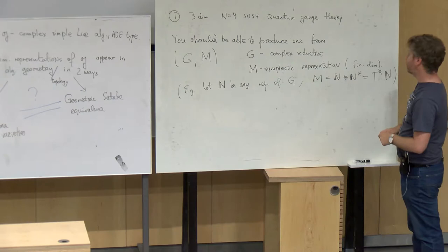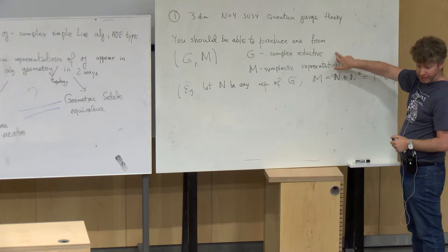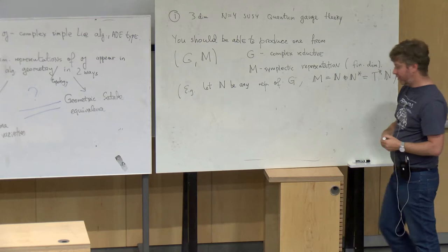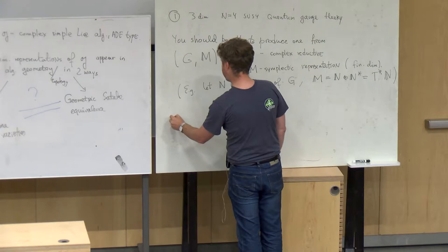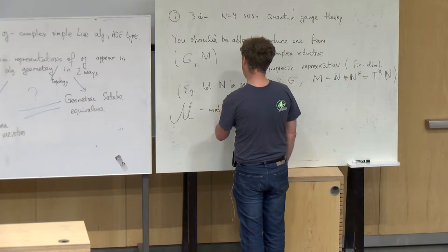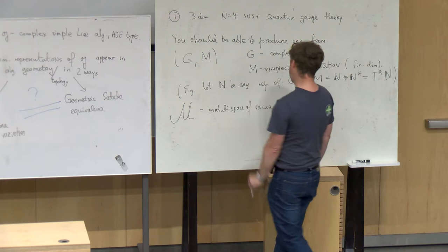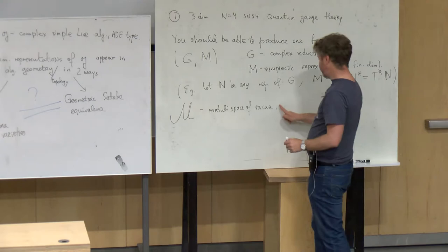This is the unclear object called a three-dimensional N=4 supersymmetric gauge theory, supposed to be constructable from this data. Given such a theory, physicists study the corresponding moduli space of vacua, which is some space. Physicists tell you there should be some space M which is the moduli space of vacua, though even for physicists it's not really clear what it is.